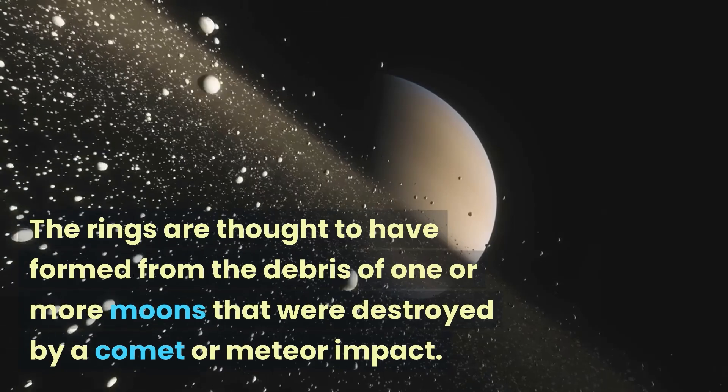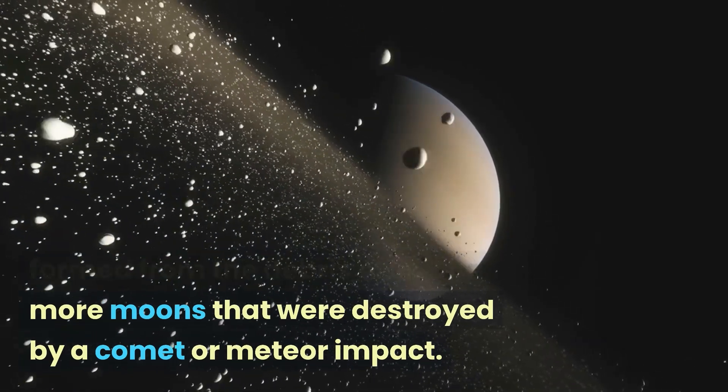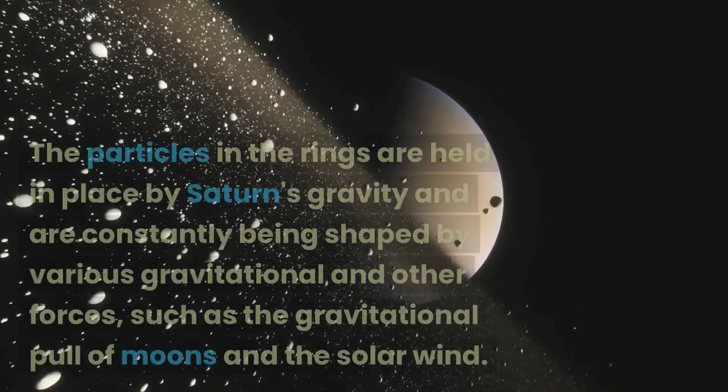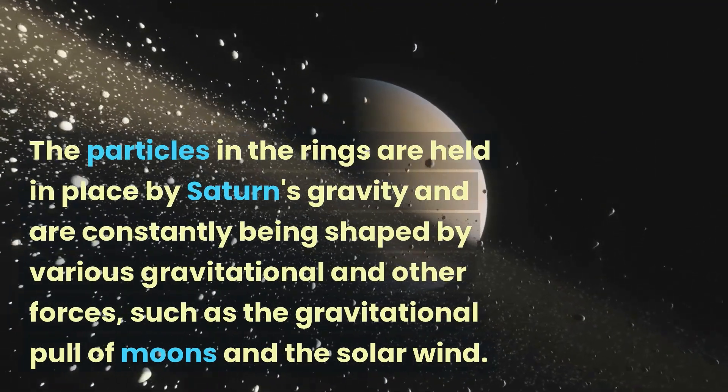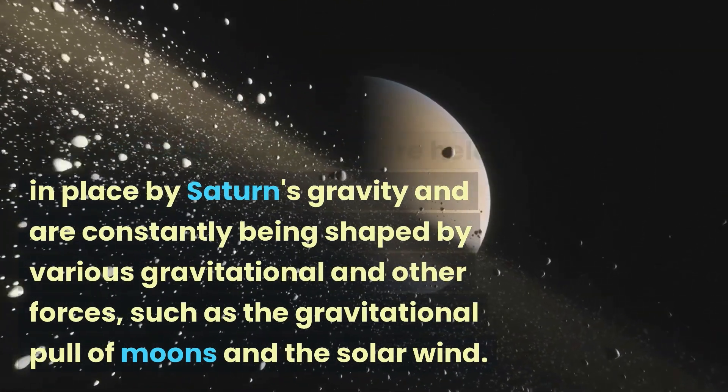The rings are thought to have formed from the debris of one or more moons that were destroyed by a comet or meteor impact. The particles in the rings are held in place by Saturn's gravity and are constantly being shaped by various gravitational and other forces, such as the gravitational pull of moons and the solar wind.